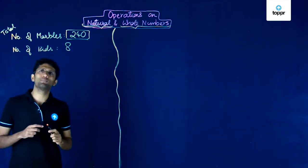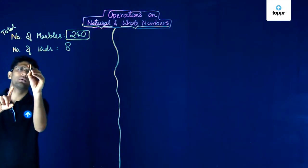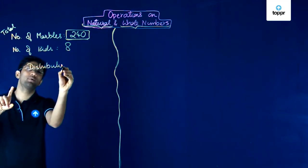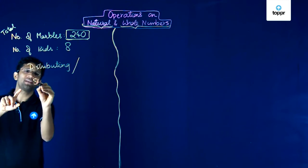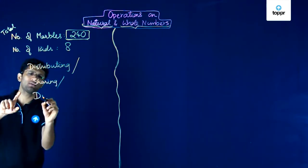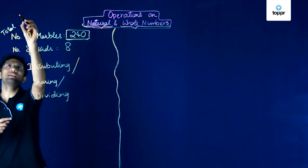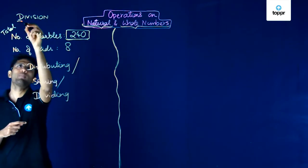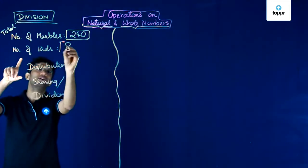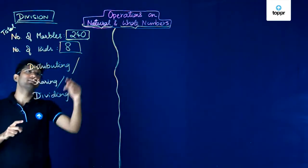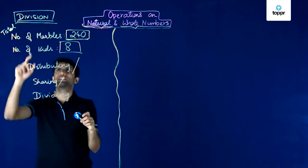To solve this problem, note that the number of marbles is 240 and the number of kids to distribute amongst is 8. Now comes the word distribution — we are distributing the marbles among the kids. Whenever we come across distributing, sharing, or dividing, the operation we perform is known as division. So this question is an example of a division operation. We divide the larger number — the number of marbles — by the smaller number, which is the number of kids. The operation to be used here is division of 240 by 8.